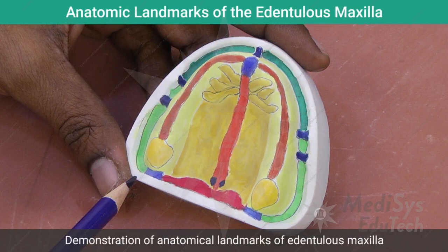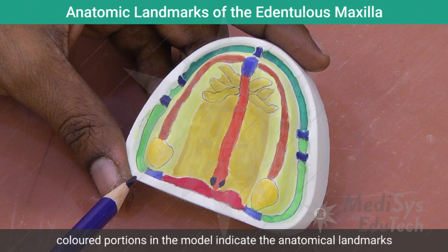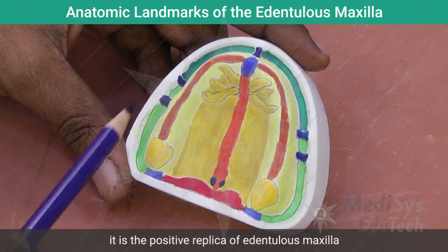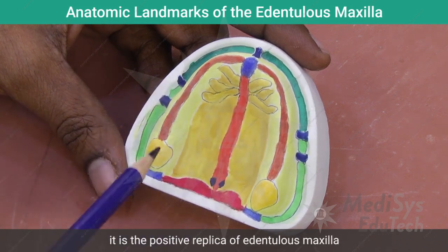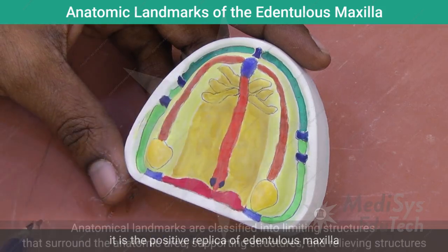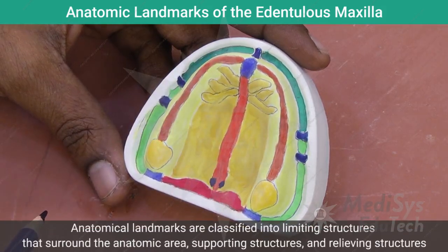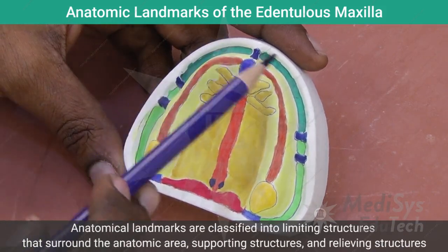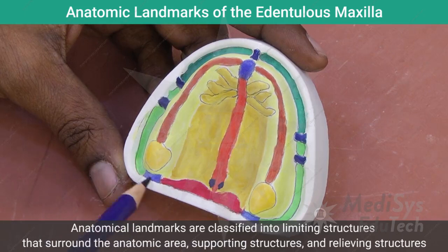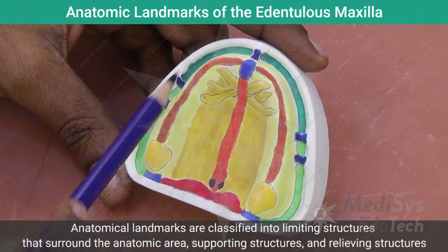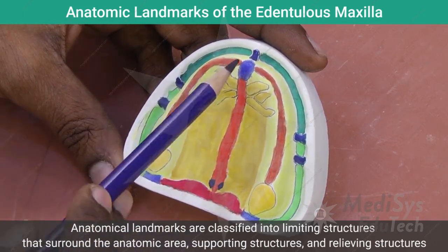The objective of this demonstration is review of the anatomic landmarks of the edentulous maxilla. This model is a positive replica of the edentulous maxilla. The colored portions of the model show the anatomic areas. The anatomic landmarks can be classified for study purposes into the limiting structures, which border the anatomic area, the supporting structures, and the relief structures.